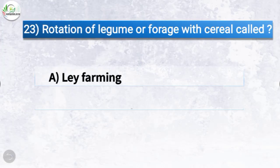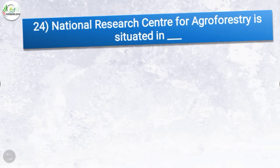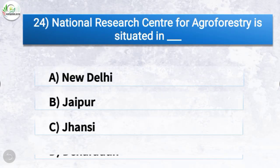Question number twenty-three: rotation of legume or forage with cereal is called what? The options are ley farming, alley cropping, mixed farming, or farming system. The correct answer is option A, ley farming. So rotation of legume or forage with cereal is called ley farming.